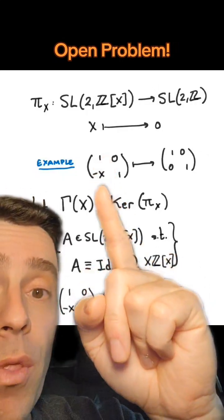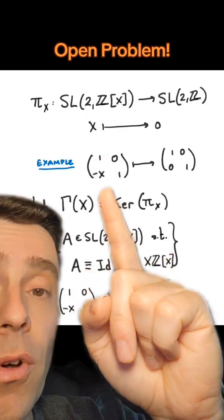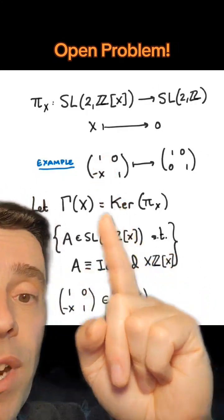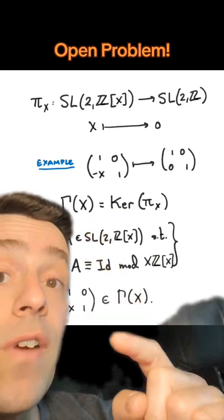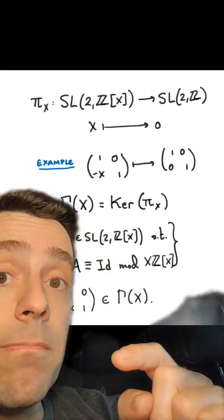So for example, this polynomial matrix right here is in the kernel, so it is an element of gamma(x).